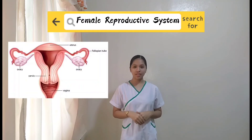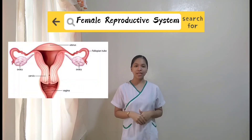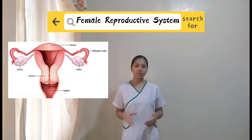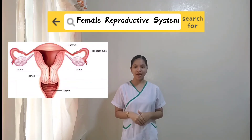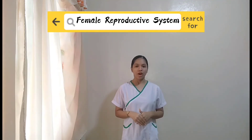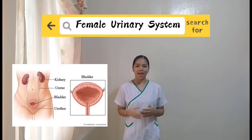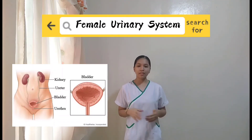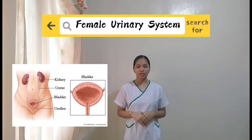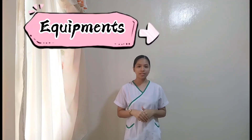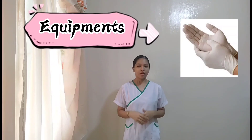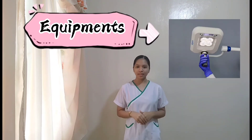The female reproductive system is involved in sexual activity and fertility, which includes organs such as the uterus, ovaries, fallopian tubes, and vagina, as well as the hormones. The female urinary system has similar parts and functions to the male urinary system; it expels excess body fluids via the kidney, ureter, urinary bladder, and urethra. The equipment needed includes examination gloves, drapes, and supplemental lighting if needed.